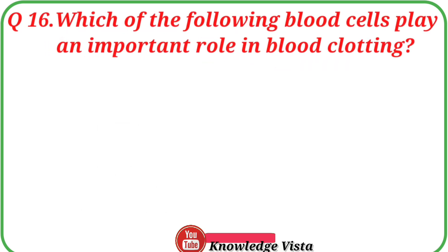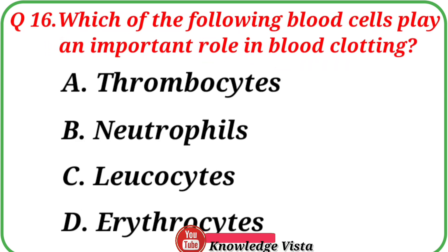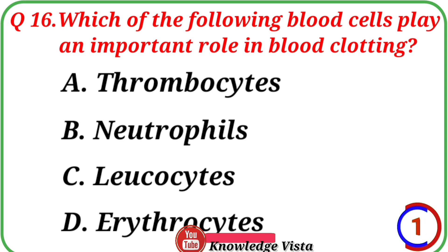Question number 16: Which of the following blood cells play an important role in blood clotting? Option A: Thrombocytes. Option B: Neutrophils. Option C: Leukocytes. Option D: Erythrocytes. The correct answer is option A, Thrombocytes.